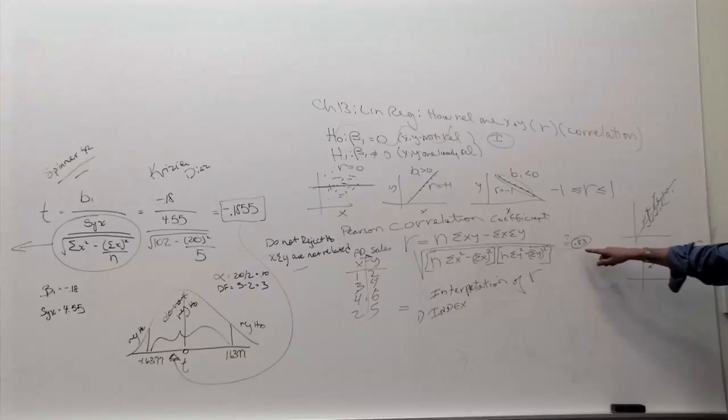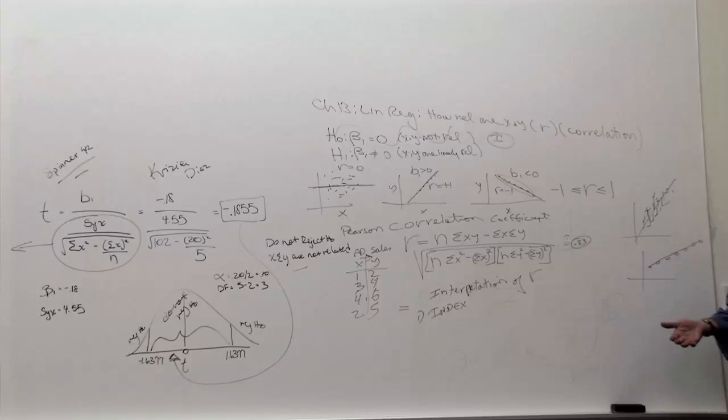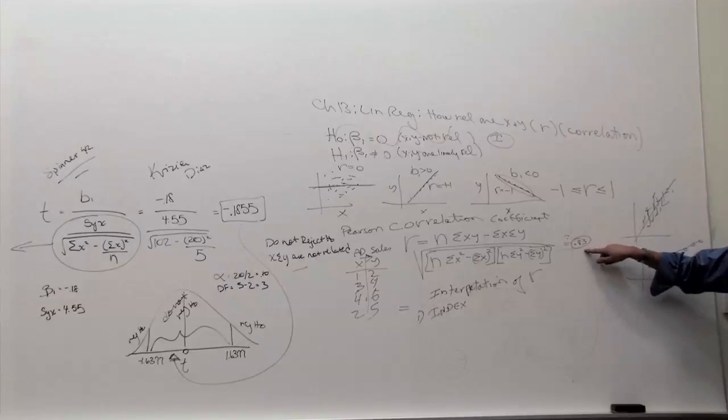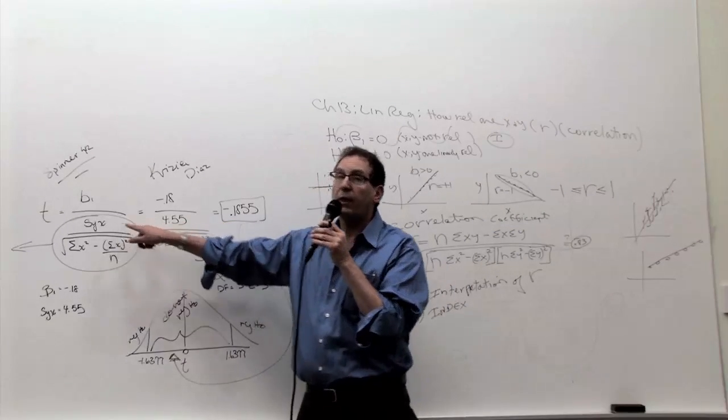It's a contradiction because on the one hand, it looks like x and y are related because R is close to 1. On the other hand, by using this other more exact methodology, it turns out x and y are not related.